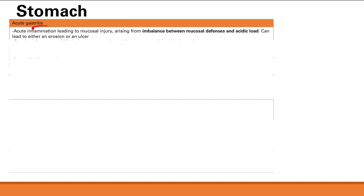Do you remember the difference between the two? An erosion was involvement of only the mucosal layer, and an ulcer was penetration or damage to the stomach lining beyond the mucosal layer.